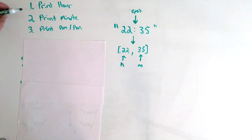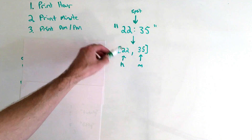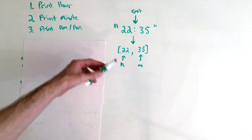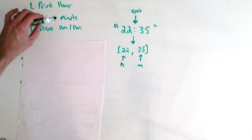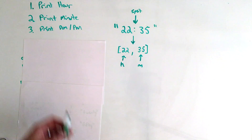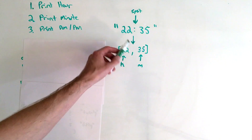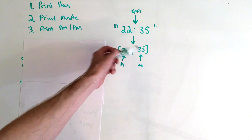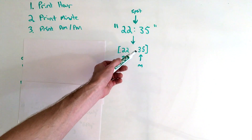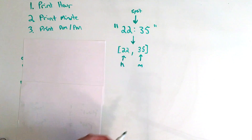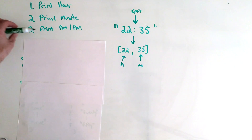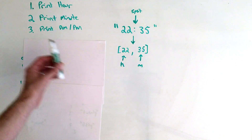If you look at the main problem we're trying to solve, there are three things to do. Sub-problem one: how do you print out the hour — 1 o'clock, 2 o'clock, up to 12 o'clock? Sub-problem two: how do you print out the minute, which will be the hardest — for example, 05 or 35? Sub-problem three: how do you print out a.m. or p.m.?